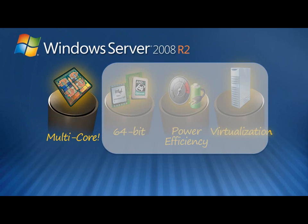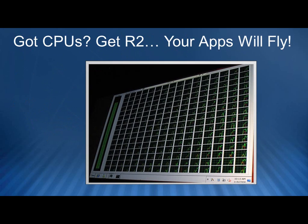In Windows Server 2008 R2, one of the four big tenants of things added to Windows Server is the ability to support up to 256 processors. Here's an actual application — SQL Server 2008 R2 — and you can see it's pegged, going all out on 256 processors. If you look closely you'll see that each one of those squares represents a processor, and it actually takes a monitor probably bigger than the one you're looking at right now to display all those processors inside Task Manager.